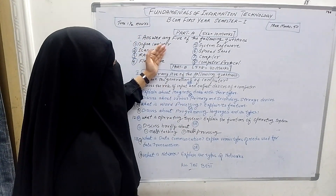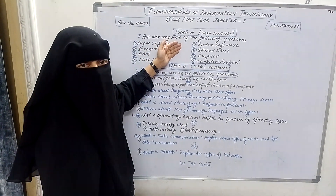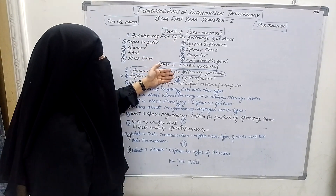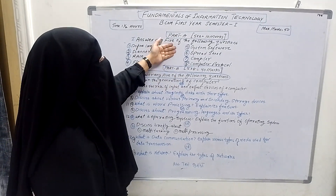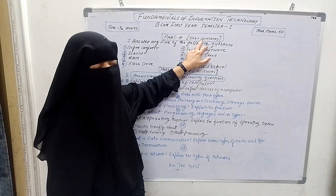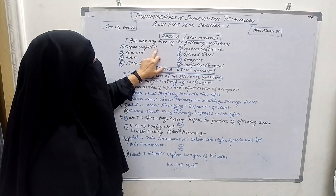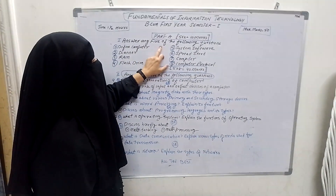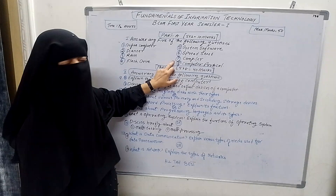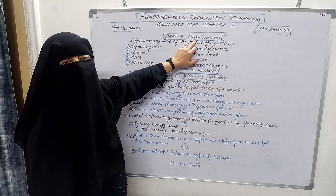This paper is divided into two parts: Part A and Part B. Part A is for 10 marks. Here you have to write any 5 questions out of 8, and each question carries two marks.